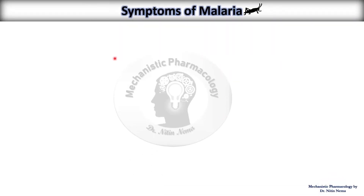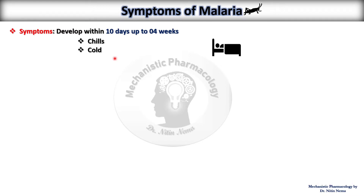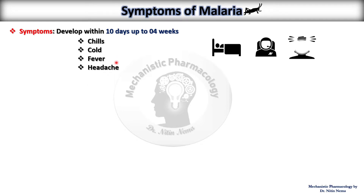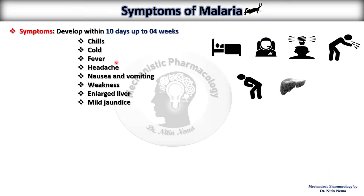Symptoms of malaria are varied; they develop within 10 days up to 4 weeks. The first common symptoms are chills and cold, fever, headache, nausea and vomiting, weakness, and enlarged liver. Apart from these, when malaria is not treated in time, mild joint pain can also occur.